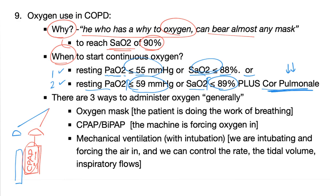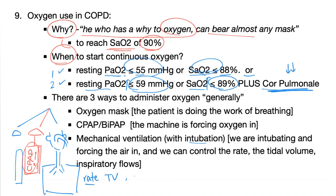The third option is mechanical ventilation with intubation — this is invasive. An endotracheal tube is inserted into the patient's trachea and connected to a mechanical ventilator, where we can adjust rate, tidal volume, and inspiratory flow. The purpose of a pulmonologist is to keep you off the ventilator — to use less invasive procedures such as the oxygen mask or CPAP first.